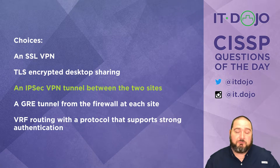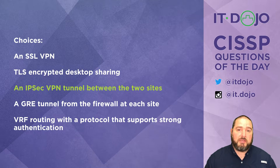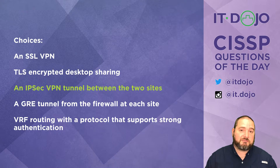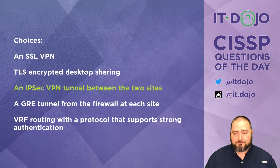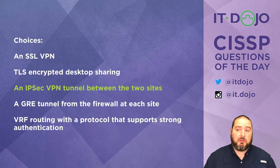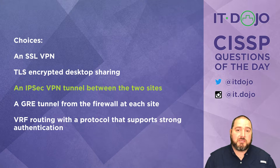If you go in and do a tunnel mode IPsec VPN between the devices at each site, you create an encrypted communication channel across the internet. You define routes and specify what's on the other side of the tunnel endpoints, and as data passes through that tunnel it will be encrypted for its journey. This allows users to seamlessly access resources from one site versus the other when getting their work done — so that's absolutely the answer you're looking for.